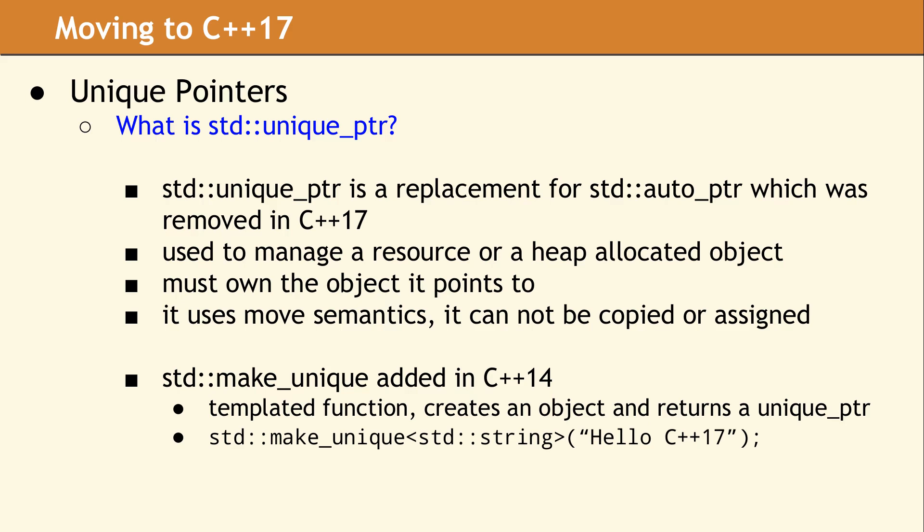When creating a unique_ptr, we suggest using the std::make_unique function, which was added in C++14. This function allocates memory for an object on the heap, calls the appropriate constructor, and then returns a unique_ptr to the new object.